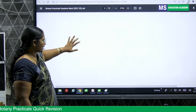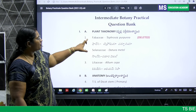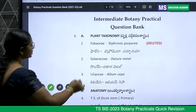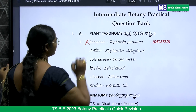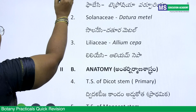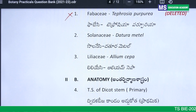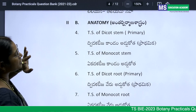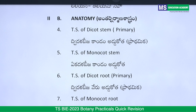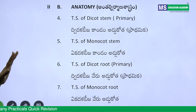Now coming to the syllabus — what exists and what is deleted. For plant taxonomy, Fabaceae is deleted. You need to focus only on Solanaceae and Liliaceae. For anatomy, all four section cuttings are in the syllabus: dicot stem, monocot stem, dicot root, and monocot root.